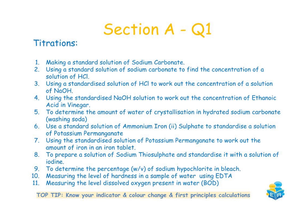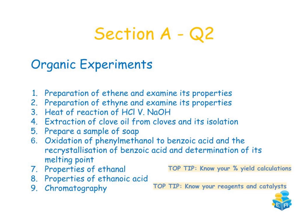A top tip for titrations and question one is to know your indicator and colour changes and also to know how to complete calculations via first principles. Question two in section A centres on your organic chemistry experiments. These include the preparation and properties of ethene and ethyne, and the heat of reaction between HCl and NaOH.